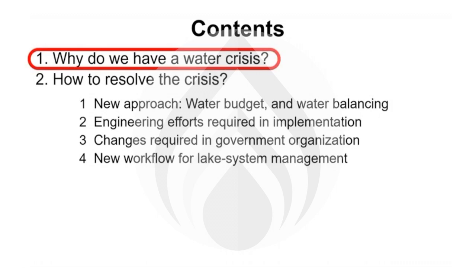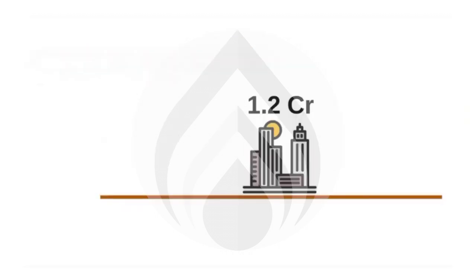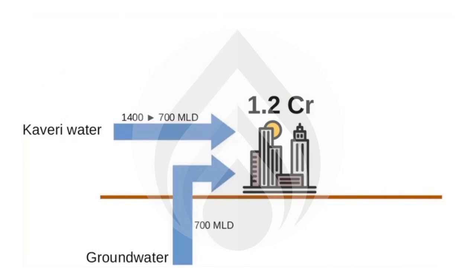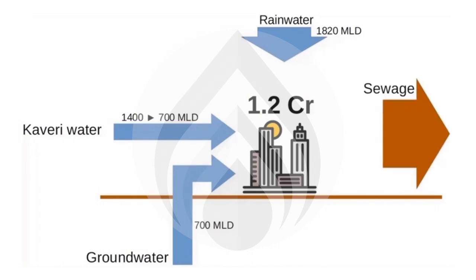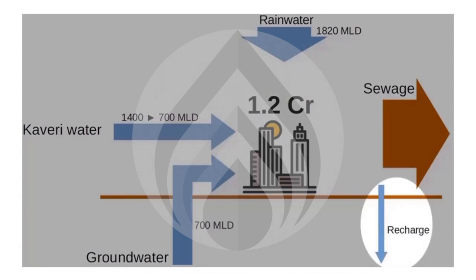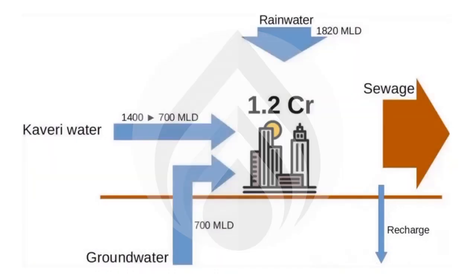Let's start with why we have a water crisis. We have two main sources of water: Kaveri water and groundwater. About 45% of our water supply comes from groundwater. Our rainfall actually exceeds these two supplies, but we do not capture this abundant rainwater. After use, most of this water flows out of the city as sewage. Only a little part of it goes to recharge the groundwater. Thus we draw 700 million liters of groundwater every day and recharge only a fraction of it. As a result, our groundwater is depleting rapidly.